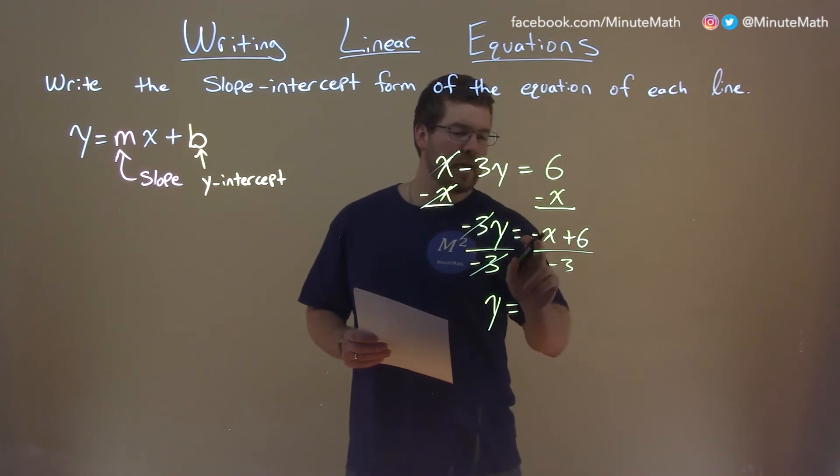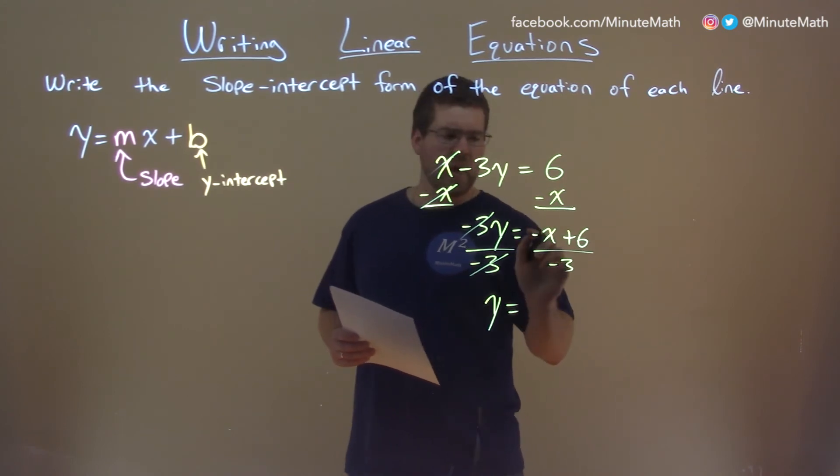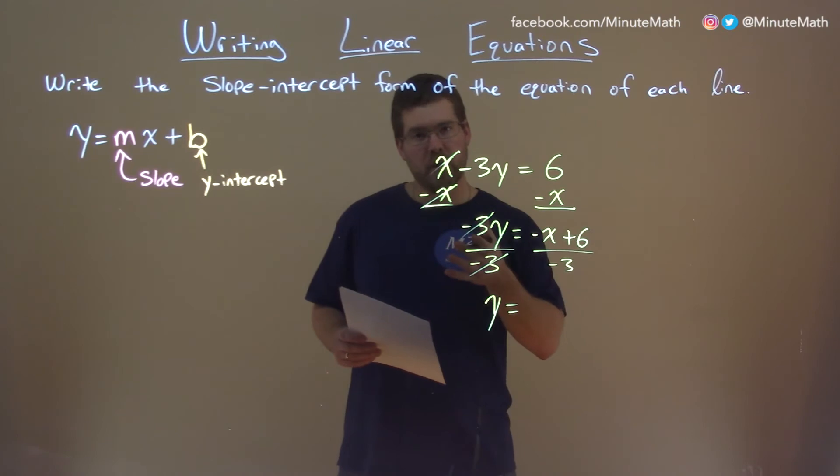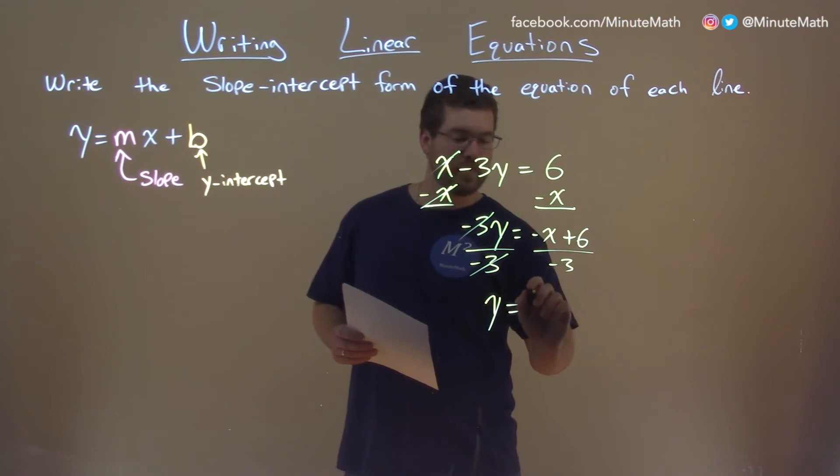We have negative x divided by negative 3 to deal with. Well, negative divided by negative is a positive. Remember, that x has a 1 in front of it—it's 1x. So negative divided by negative is positive, 1 divided by 3 is 1 third. We have x here.